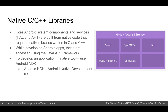Another important part of the Android platform are the native C and C++ libraries. Many core Android system components and services such as ART and HAL are built from native code that requires native libraries written in C and C++. The Java Framework APIs provide a wrapper over these native libraries for use while developing Android apps. If you're developing an app that requires C or C++ code, you can use the Android NDK (Native Development Kit) to access some of these native platform libraries directly from your Java code.